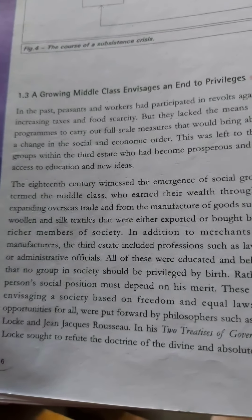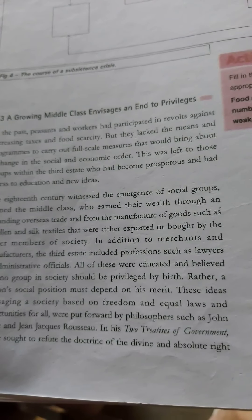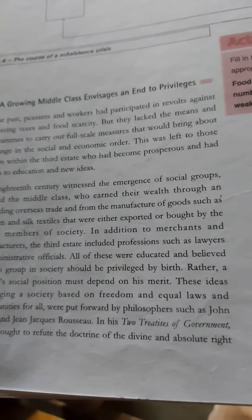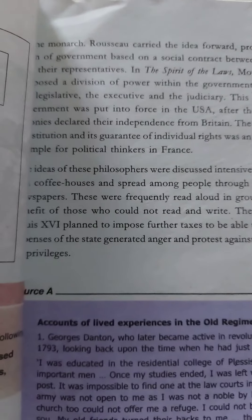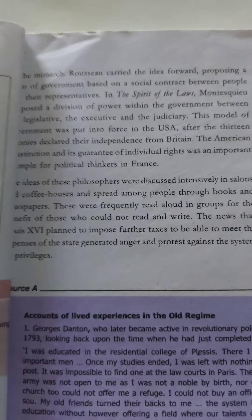These ideas envisaging a society based on freedom, equal laws, and opportunities for all were put forward by philosophers such as John Locke and Jean-Jacques Rousseau. In his Two Treatises of Government, Locke sought to refute the doctrine of the divine and absolute right of the monarch. Rousseau carried the idea forward, proposing a government based on a social contract between people and their representatives. Montesquieu, in The Spirit of Laws, proposed the division of power into legislative, executive, and judiciary.